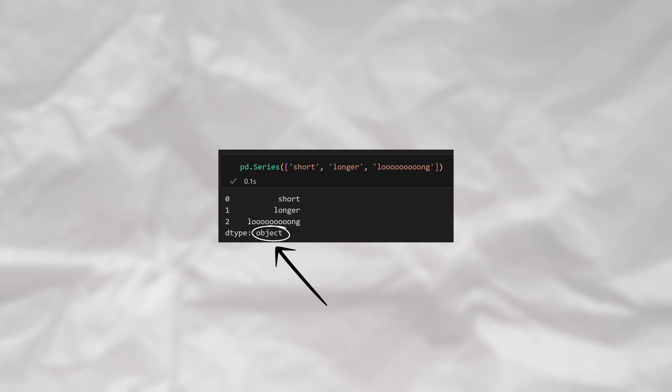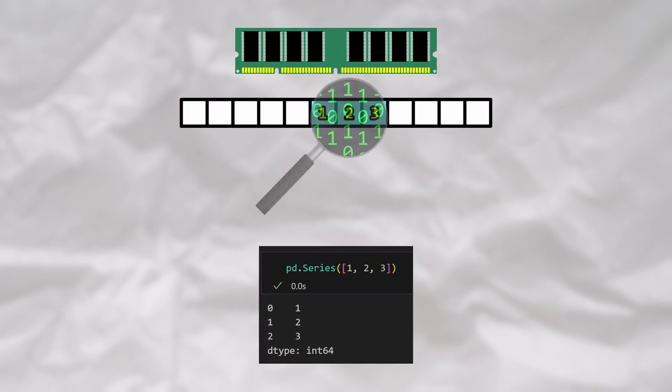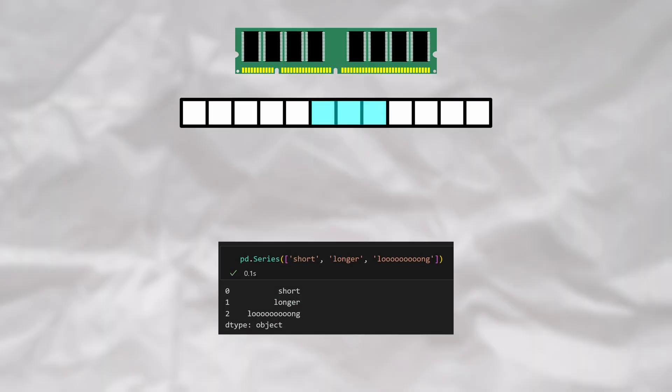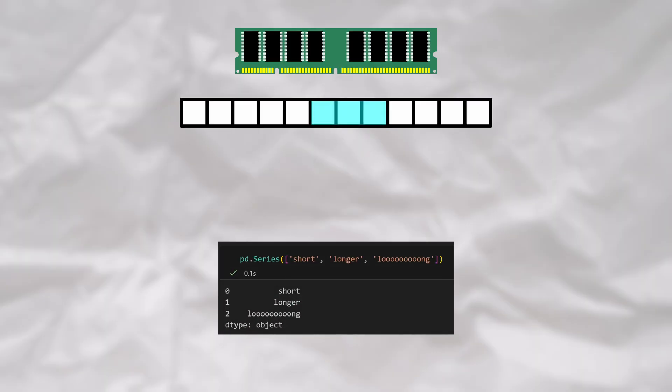This is a perfect illustration of what happens inside of memory. When we stored integers, the actual byte data for the integers were stored in the contiguous memory blocks of the series. Now, when we use variable length strings instead, rather than storing the strings directly in the series, we actually store references pointing to the strings. This is precisely how we can retain the ability to constant time index into a series. In this case, the data type of object actually refers to the pointers that point to the underlying strings.